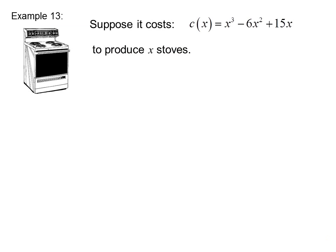Example 13. Suppose it costs C(x) equals x cubed minus 6x squared plus 15x to produce x stoves. So we have the cost function. C prime x equals 3x squared minus 12x plus 15. That first derivative of the cost function would give you the slope of the cost function.